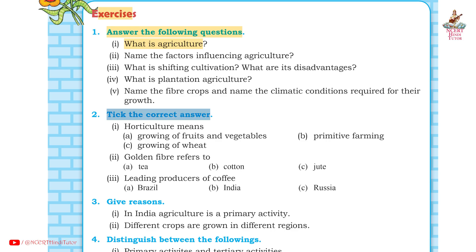Section 2: Tick the correct answer. First, horticulture means — Answer: A. Growing of fruits and vegetables. Second, golden fiber refers to — Answer: C. Jute. Third, leading producers of coffee — Answer: A. Brazil.